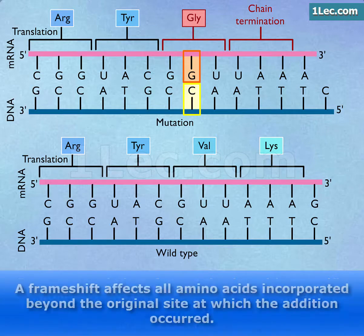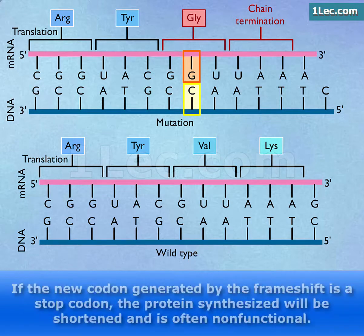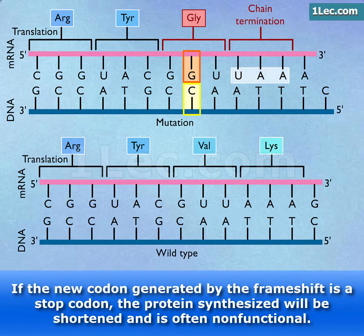A frameshift affects all amino acids incorporated beyond the original site at which the addition occurred. If the new codon generated by the frameshift is a stop codon, the protein synthesized will be shortened and is often non-functional.